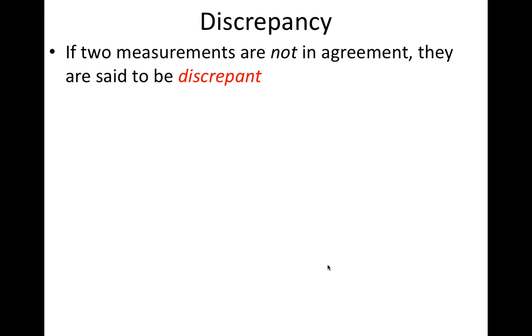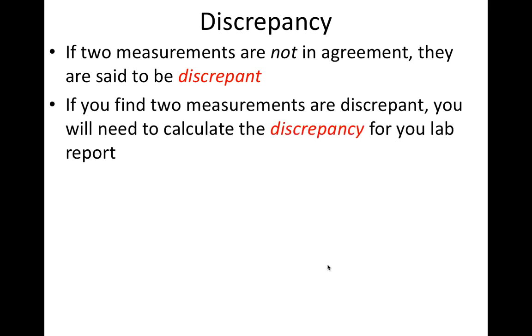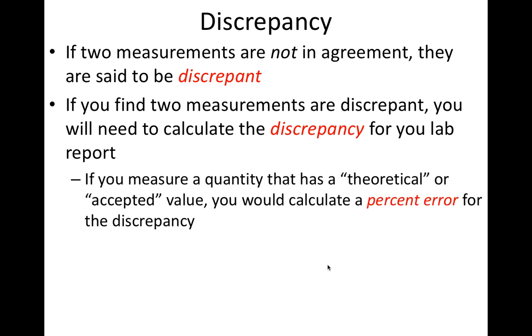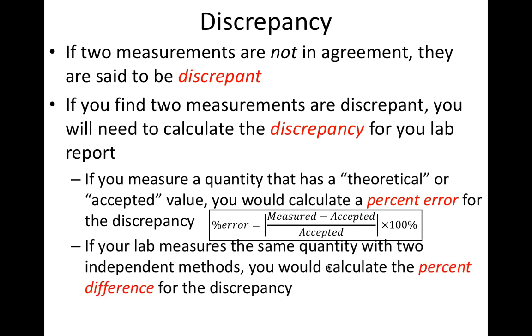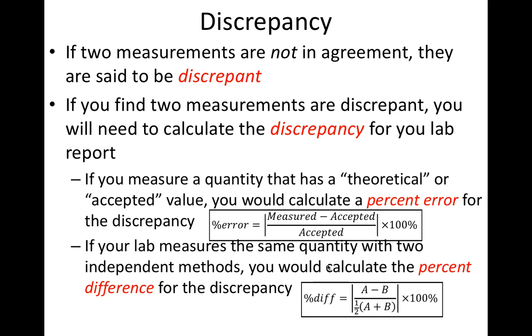In a lab experiment, if two measurements are discrepant, you will need to quantify the discrepancy for your lab report. If the purpose of the lab is to measure a quantity that has some theoretical or accepted value, then you should calculate a percent error for the discrepancy. If the purpose of the lab is to measure the same thing with two independent methods, then you would calculate a percent difference between the two measurements.